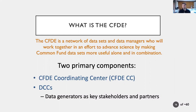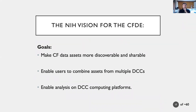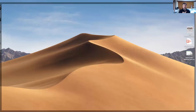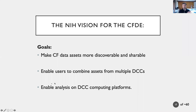The two primary components of the CFDE are the coordinating center, which I'm part of, and the data coordinating centers themselves. Typically each Common Fund program has at least one — sometimes up to a dozen — data coordinating centers charged with curating and making the data available together with analysis pipelines. These DCCs are viewed as key stakeholders and partners in the larger effort of the CFDE. The NIH vision for the CFDE is to make datasets more discoverable and shareable, enable users to combine assets from across different DCCs, and enable analyses on DCC computing platforms.